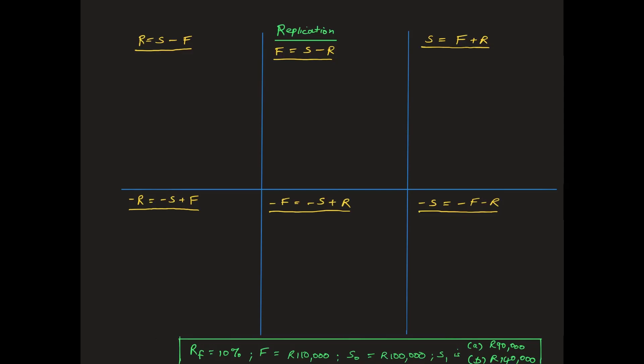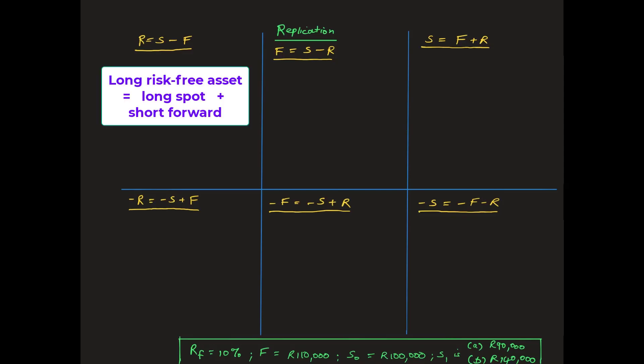Let's start in the top left-hand corner with the proposition that a long position in the risk-free asset is replicated by a long position in the gold spot market combined with a short position in the gold forward market. Notice that there is an implied positive sign for the R and the S in this replication equation.